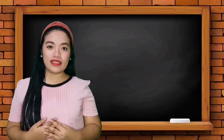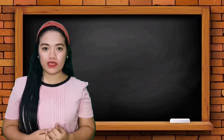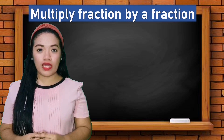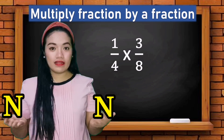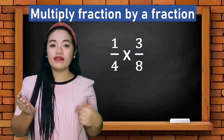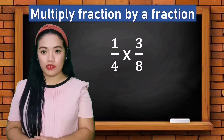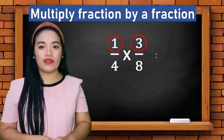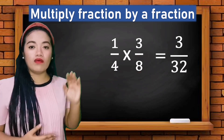Now let us multiply fractions. Example one: one fourth times three eighths. Remember this technique — N by N, D by D — which means numerator times numerator, denominator times denominator. So: one times three is three, four times eight is thirty-two.